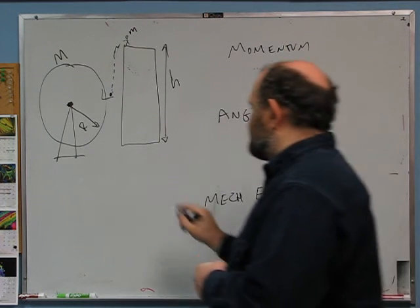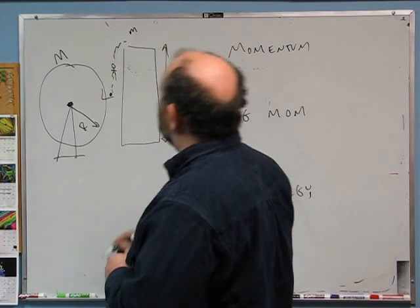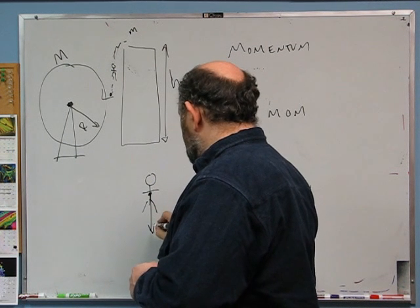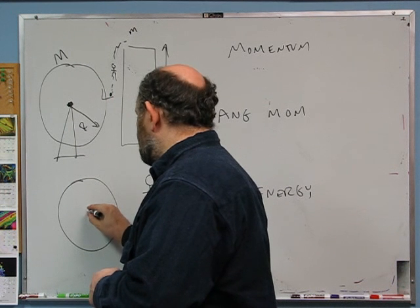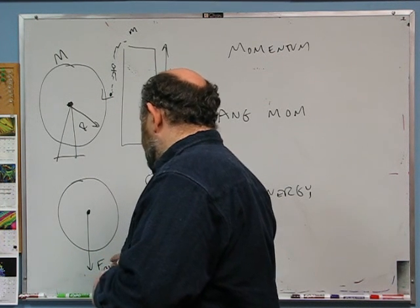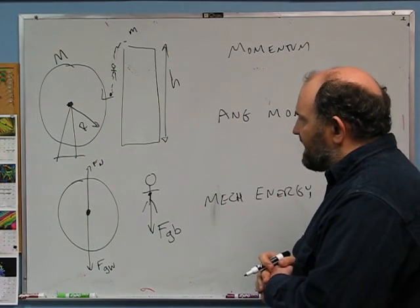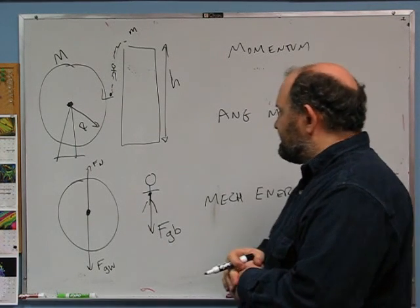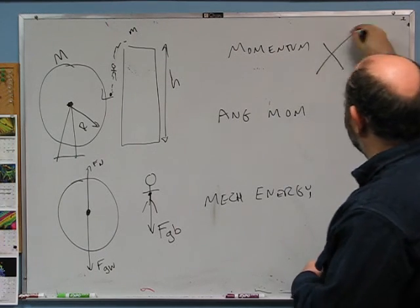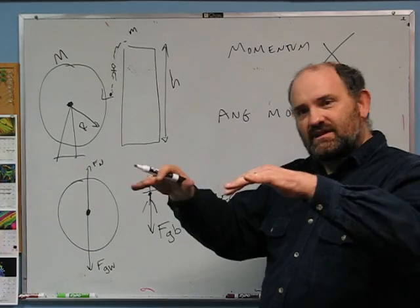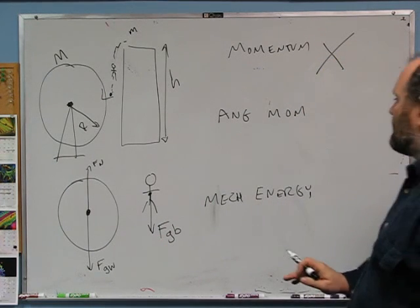Let's think about what forces we have on the system. Once James Bond has jumped and is now falling, there is exactly one force on him — the force of gravity, ignoring air resistance. On the Ferris wheel, we have force of gravity on the wheel and a normal force at the pivot pushing upwards. Force of gravity is an external force that is going to break momentum conservation, because we're not keeping track of the Earth's momentum. So momentum is not conserved.